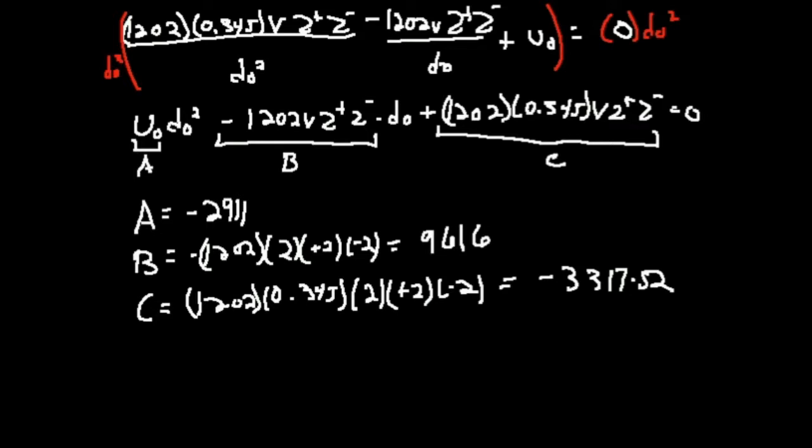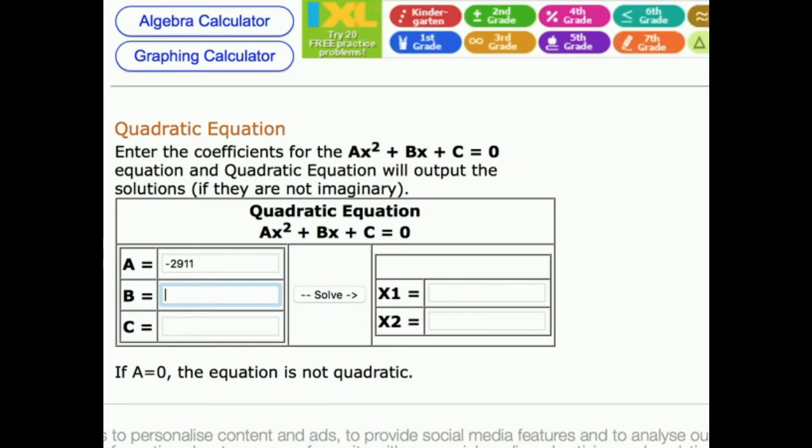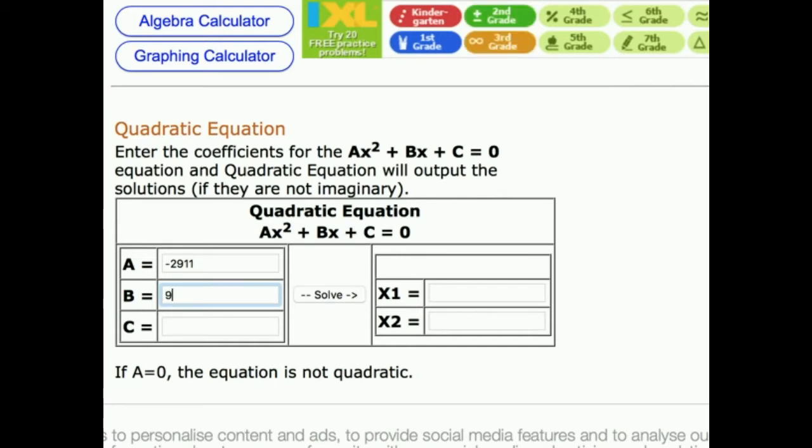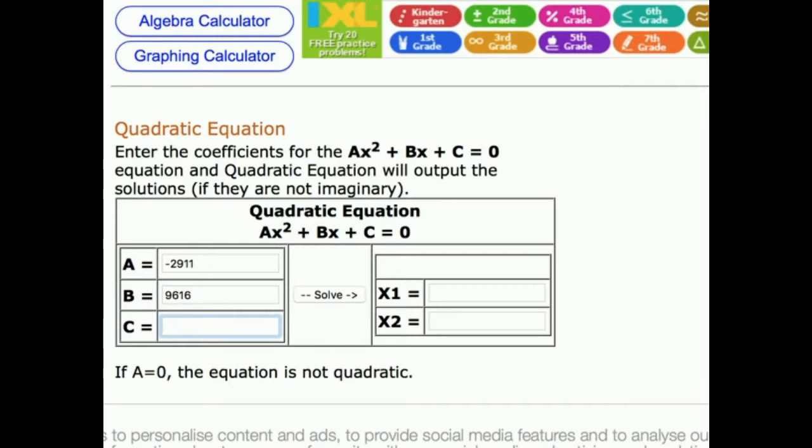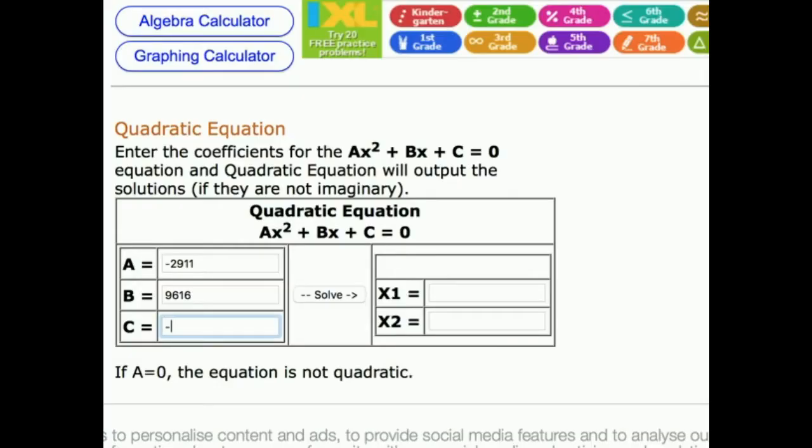So I'm going to plug these numbers in. So I pulled one up, negative 2911. That's my A. B is 9616. This is negative 3317.52. And now we're going to solve it, and these are my two values.